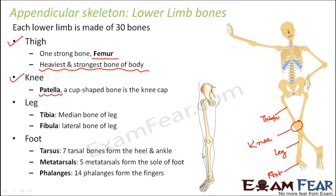Next is the leg, which is very similar to the forearm and also has two bones. One is tibia, which is the medial bone, and the other is fibula. This is very similar to how the forearm had radius and ulna.